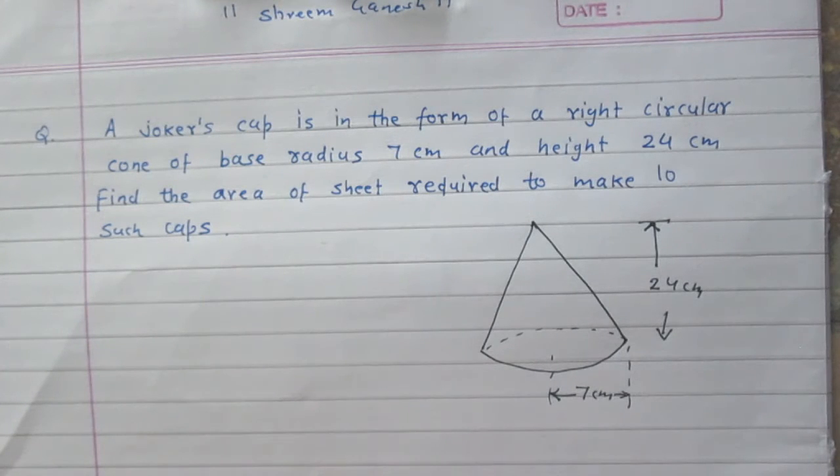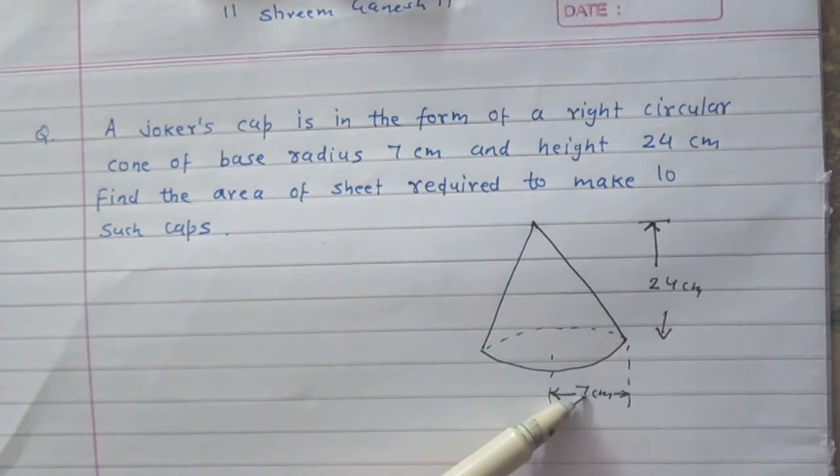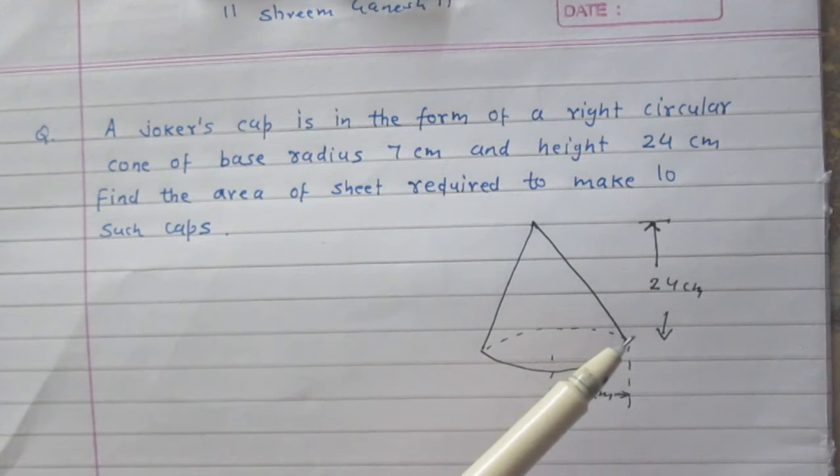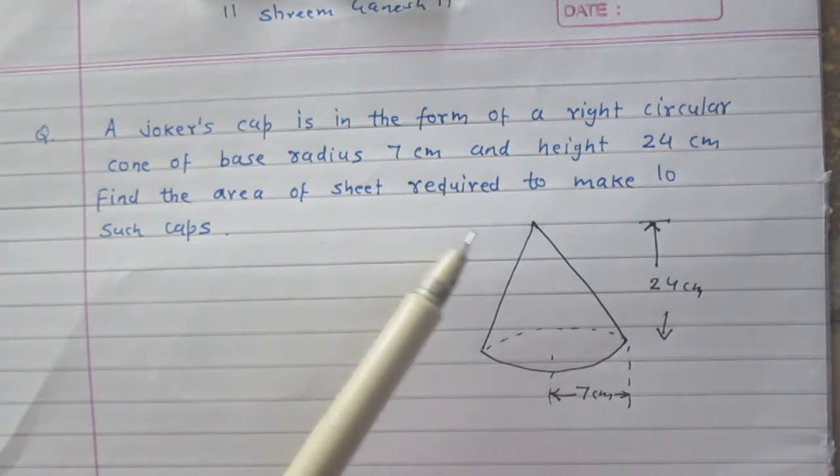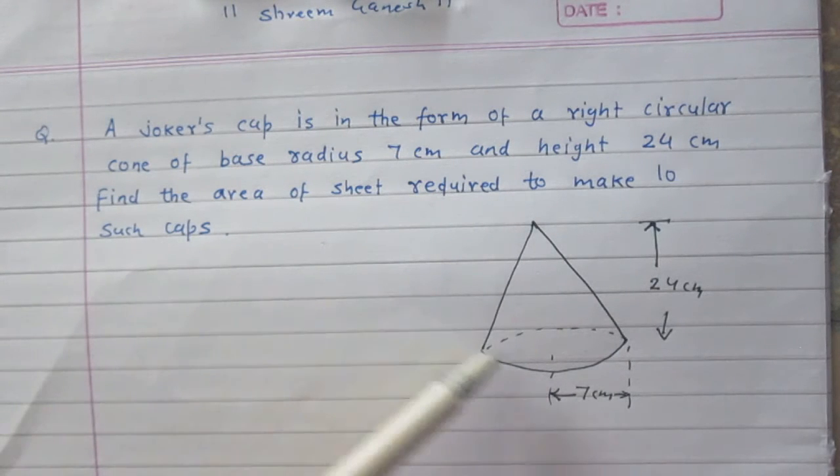Let us consider the cone in this diagram represents the joker's cap. The radius of the base of this cone is 7 cm and the vertical height is 24 cm. It is given to us. And we are to find the area of sheet required to make 10 such caps.